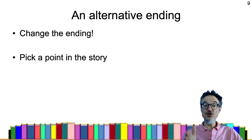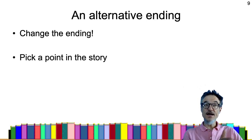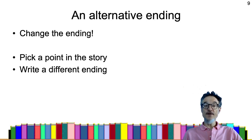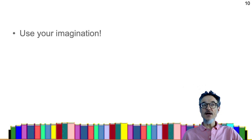Your final choice is an alternative ending. Please change the ending of the book — pick a point somewhere in the story and then write a different ending, change the events, change the story. So those are your five choices.